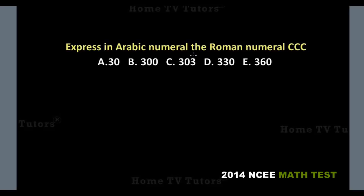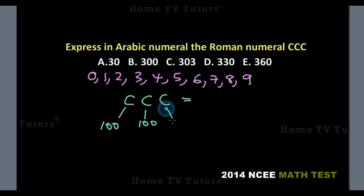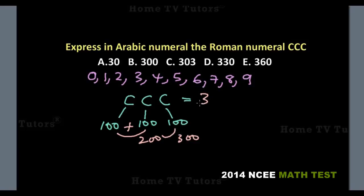Express in Arabic numeral the Roman numeral CCC. The Arabic numeral uses the usual ten digits: 0, 1, 2, 3, 4, 5, 6, 7, 8, and 9. Expressing the Roman numeral CCC in Arabic: if C is 100 and we have three 100s, then 100 plus 100 gives us 200, and 200 plus another 100 gives us 300. So the answer option B is the right answer.